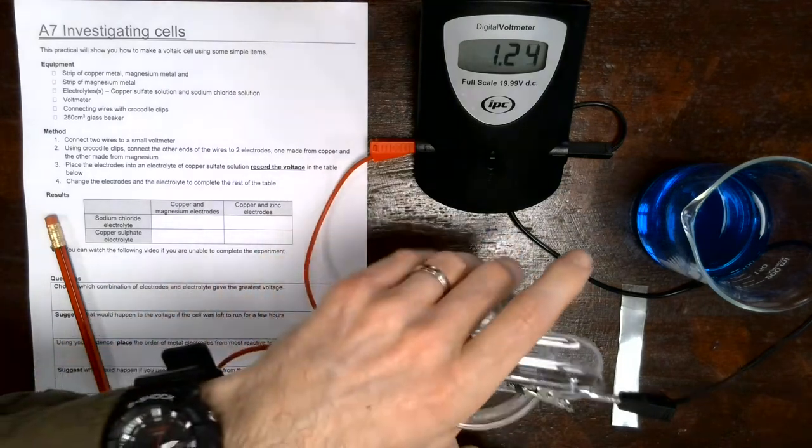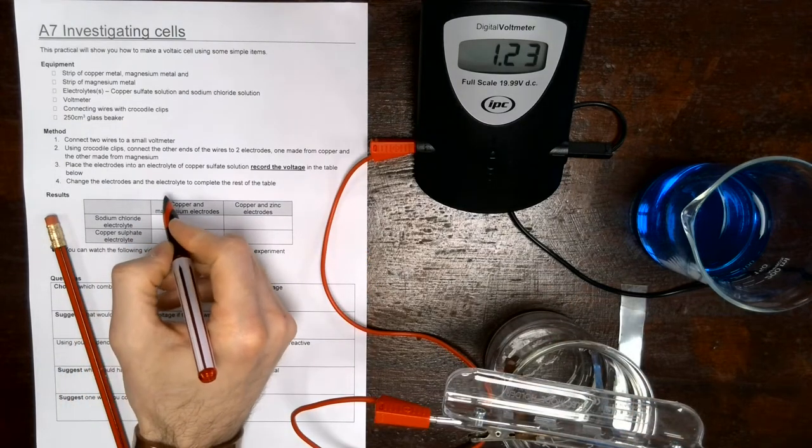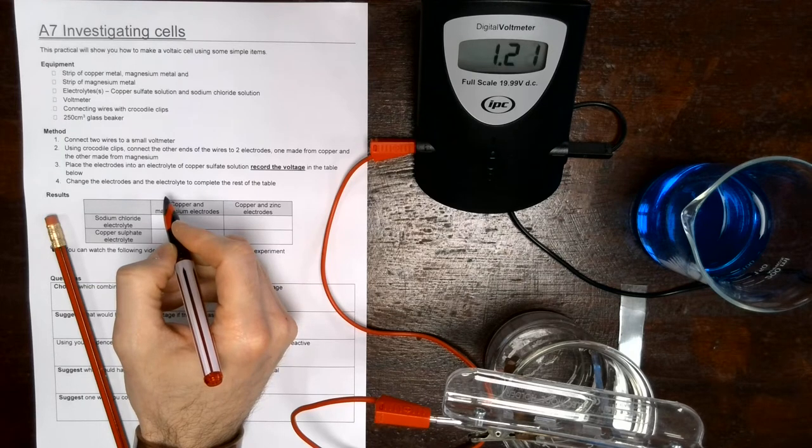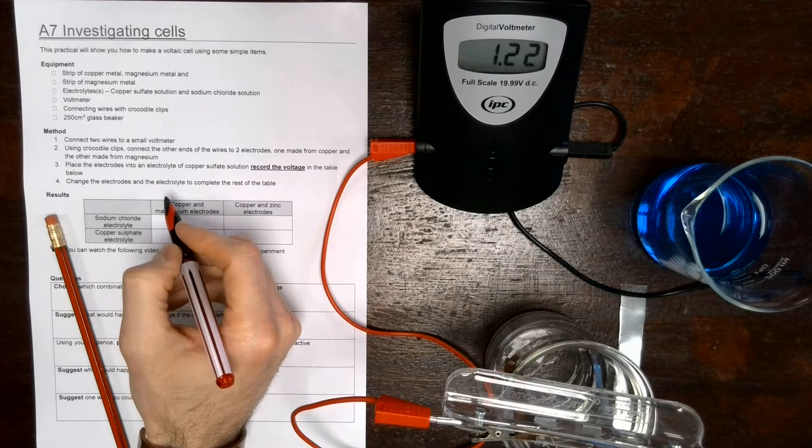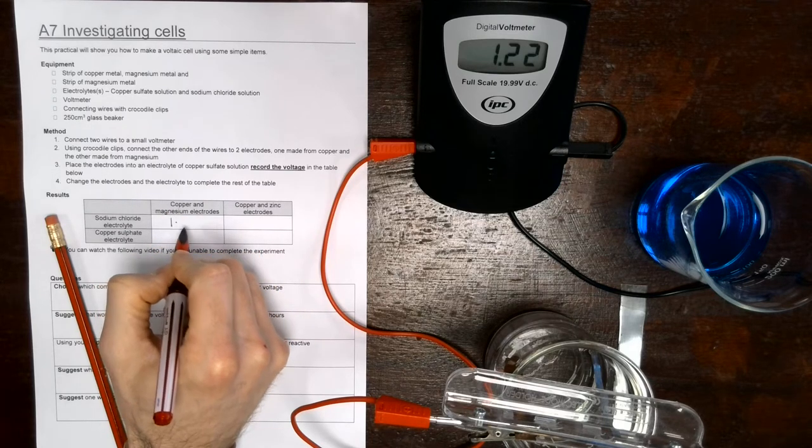We're going to record that on our sheet of paper. Let's move those wires out of the way and we'll move that away as well. So now we get a reading of approximately 1.24, 1.25 volts. It's fluctuating ever so slightly. That might be to do with the movement of the solution. So let's just pick a number here. We've got 1.22.